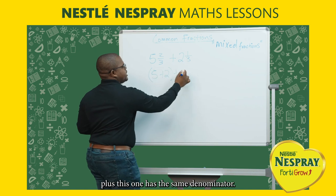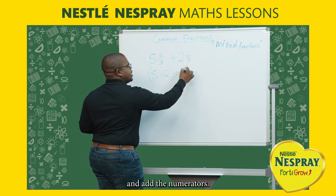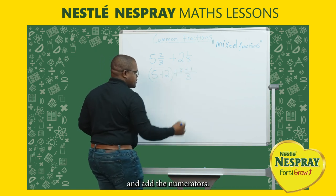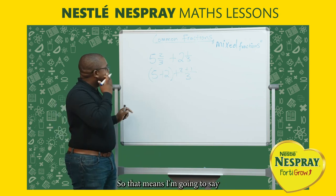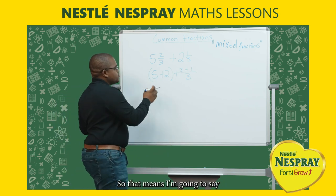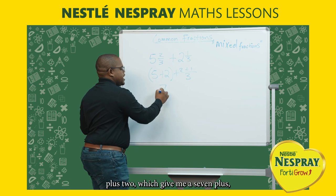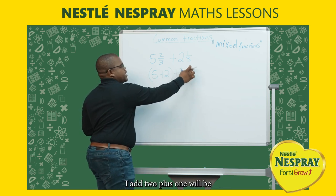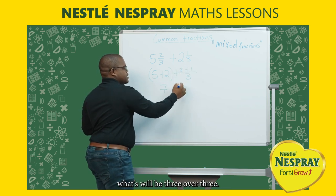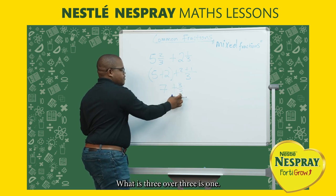Since they have the same denominator, we take one denominator and add the numerators. So five plus two gives me seven, and two plus one will be three over three. What is three over three? It is one.